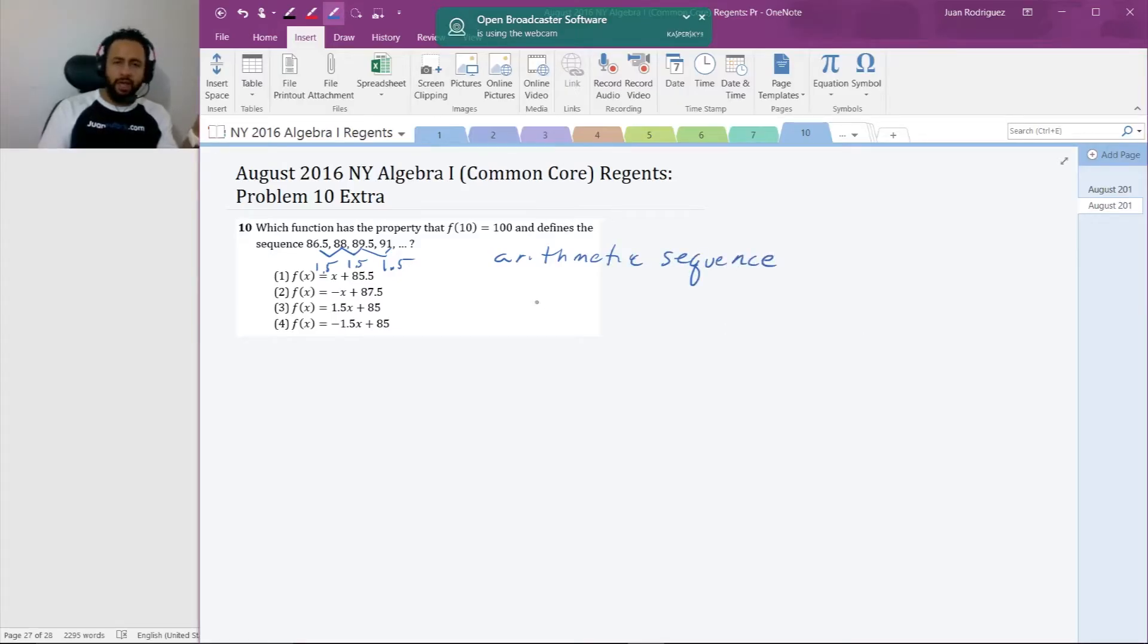There's obviously an infinite number of sequences that could start out with just any four numbers. I got a_n is equal to a_1 plus n minus 1 times d. In this case let's use the f notation. So f of x is equal to a_1, or f of 1, plus x minus 1 times d. And d is 1.5, and a_1 is 86.5, or f of 1 is 86.5.